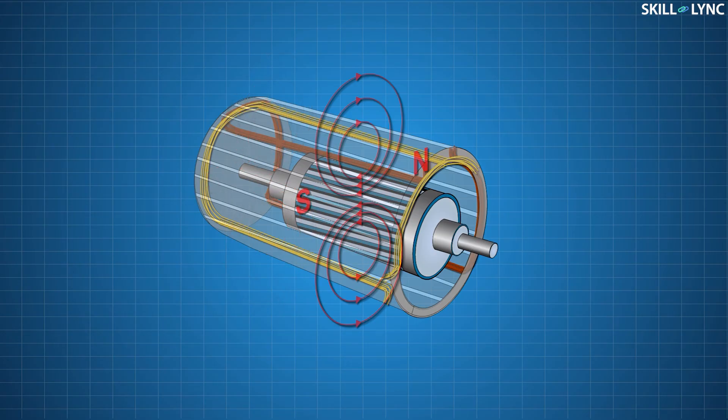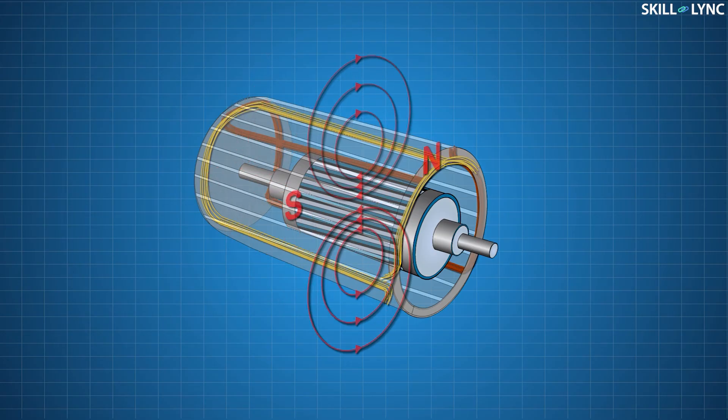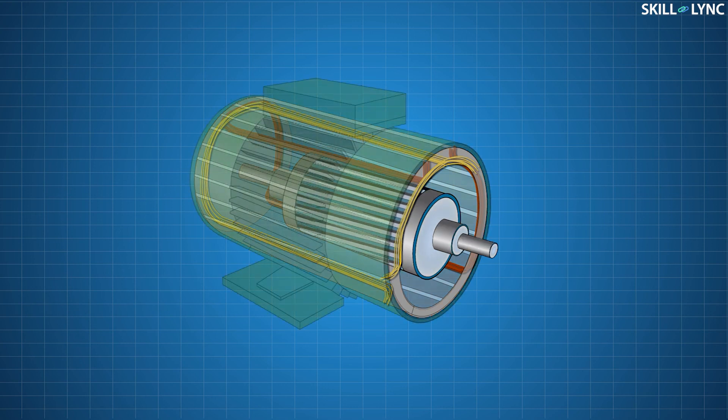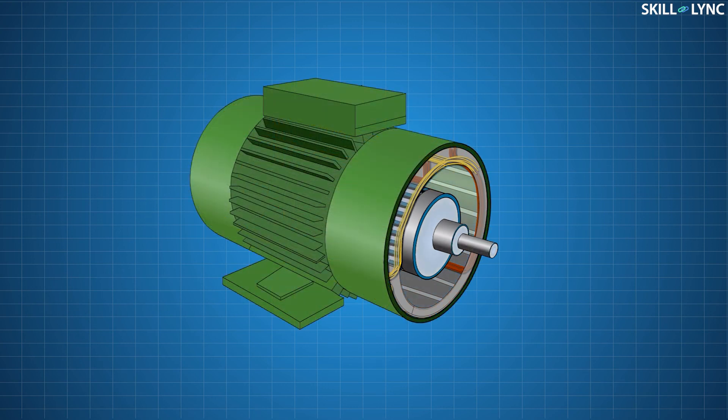This gives the required initial torque and makes the rotor rotate in one direction. Now, even if the current in the auxiliary winding is cut off, the rotor will still rotate because it has the initial torque required for its motion. The auxiliary winding is cut off by a switch.